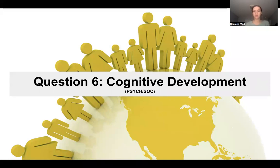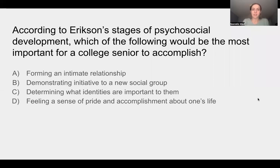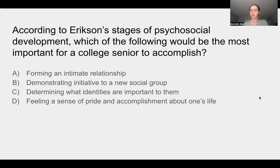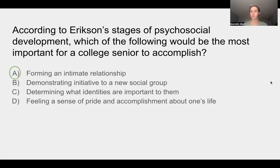Question six covers cognitive development. According to Erikson's stages of psychosocial development, which of the following would be most important for a college senior to accomplish? Take a minute and answer. The answer is A: forming an intimate relationship. A college senior would be about 21–22 years old, so you'd determine which Erikson stage they're in. Now we'll go through all eight stages, their ages, and important accomplishments. Erikson focused less on sexual energy and more on how we perceive our identity at various stages — that's why these are psychosocial stages, versus Freud's psychosexual stages. According to Erikson, an individual emerges from each stage either strengthening their character or with a sense of inadequacy.